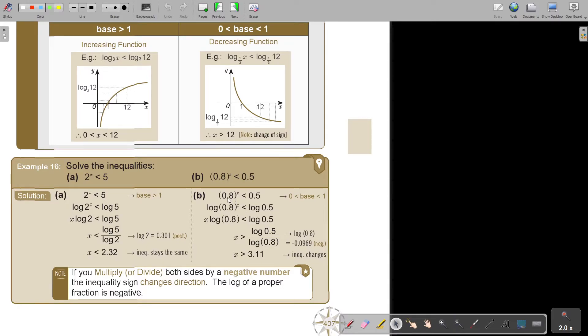But if you now see the fraction, the base is now like this, between 0 and 1, it's a fraction. Take log on both sides. Bring the x. And now you can test it. Press on your calculator log 0.8, and you're going to see it's a negative number. And as soon as you divide by a negative number, the sign must change around. So if you multiply or divide both sides by a negative number, the inequality sign changes direction. The log of a proper fraction is negative.